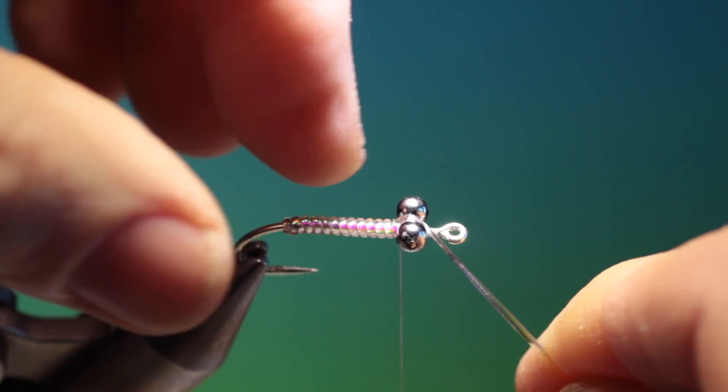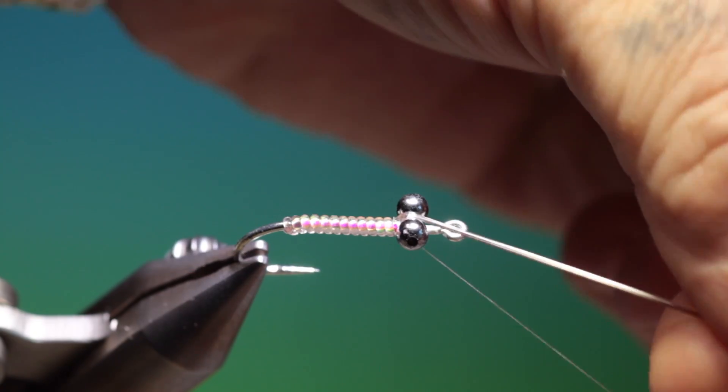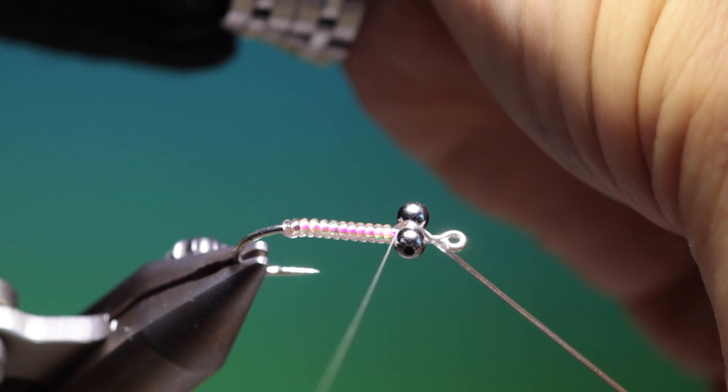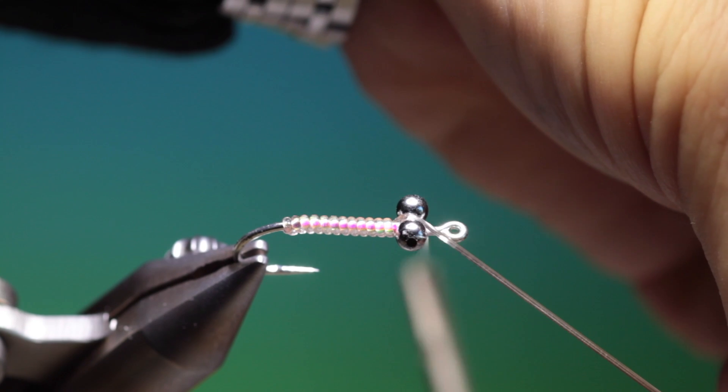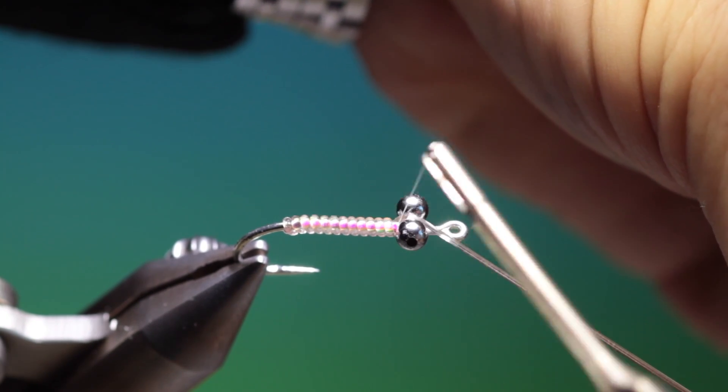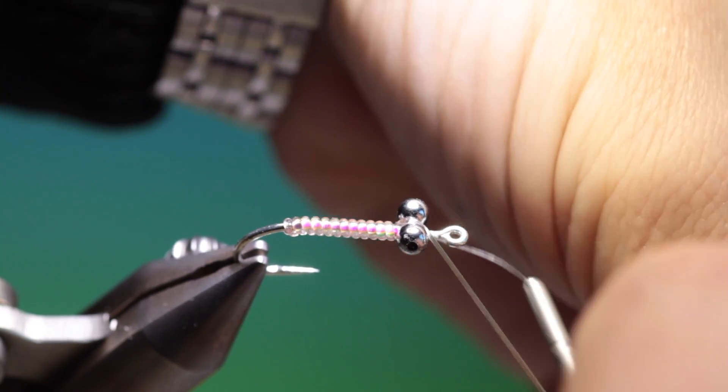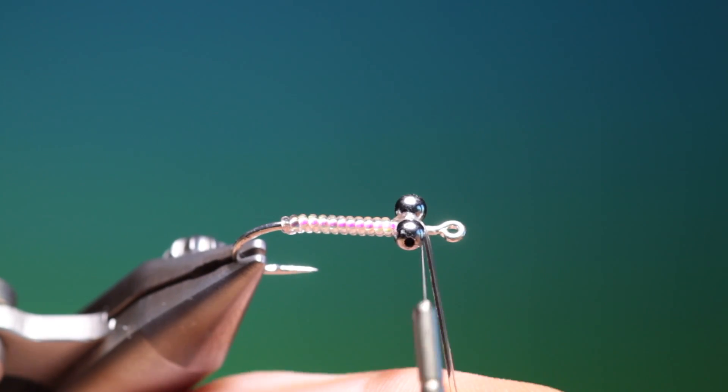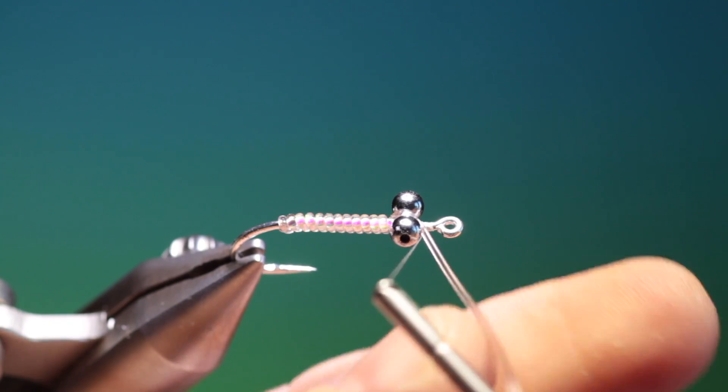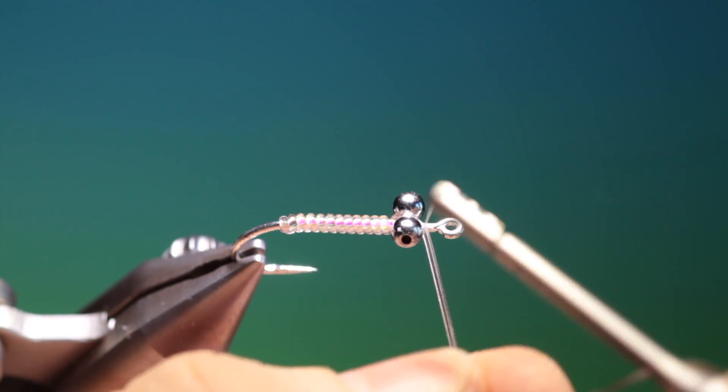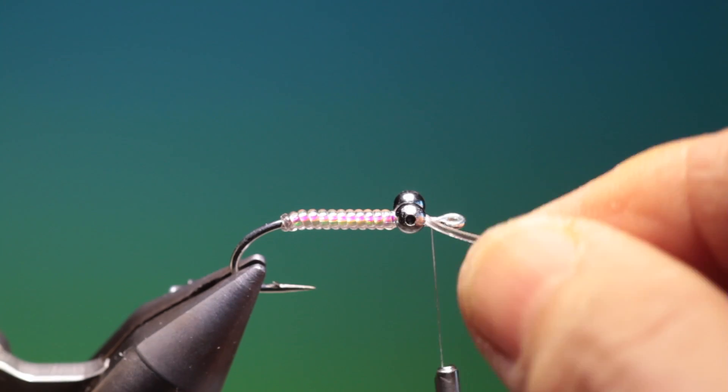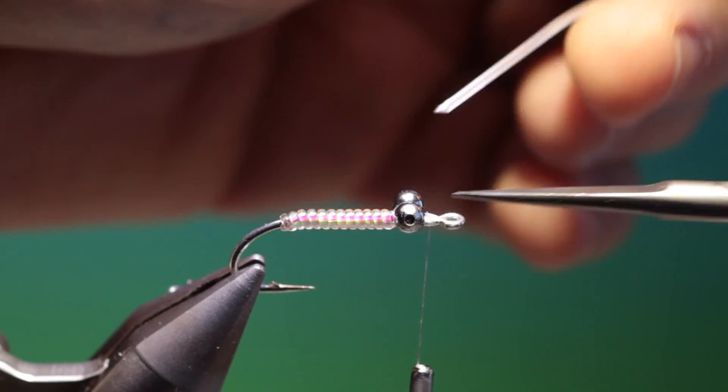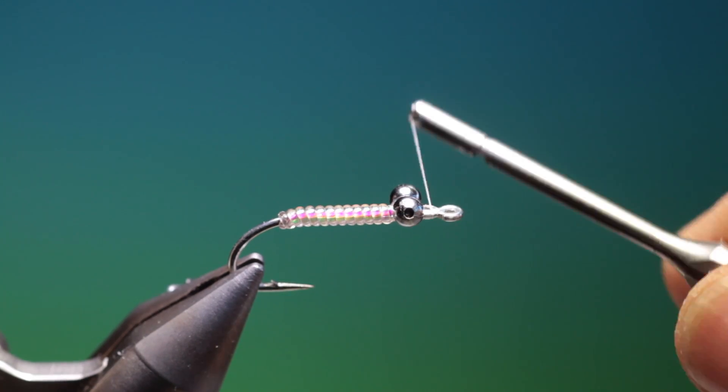Take that over the eye. Take this forward. Swap that over. Let's tighten that up, lock it down, go forward. And then we'll trim that off just at an angle on the underside from where we are now of the hook.